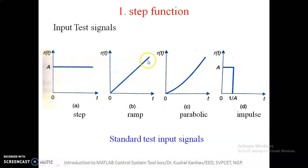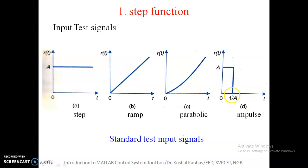The second is a ramp input, which is linearly rising and can be represented as A×T — as time increases, the value increases with a constant slope. The third is a parabolic input. The fourth is an impulse input — a practical impulse where if you take the area under the curve, A × (1/A) equals 1. These are the four standard test input signals used to check any system, and we are going to focus on the step input.